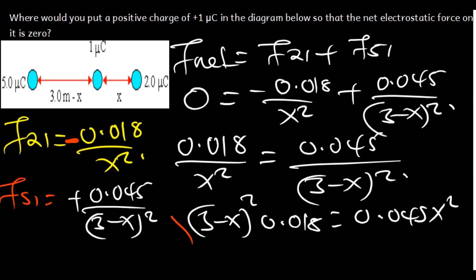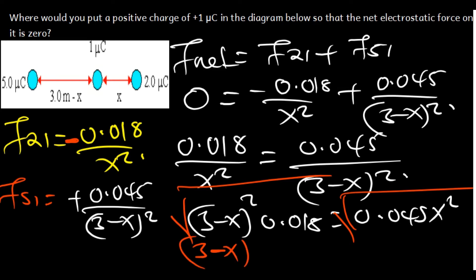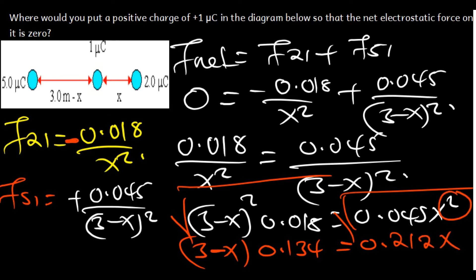Since we have squares on both sides, we can take the square root of both sides to remove the squared terms. The square root of 0.018 gives 0.134, and the square root of 0.045 gives 0.212. So we have 0.134 times (3 minus X) equals 0.212 times X.